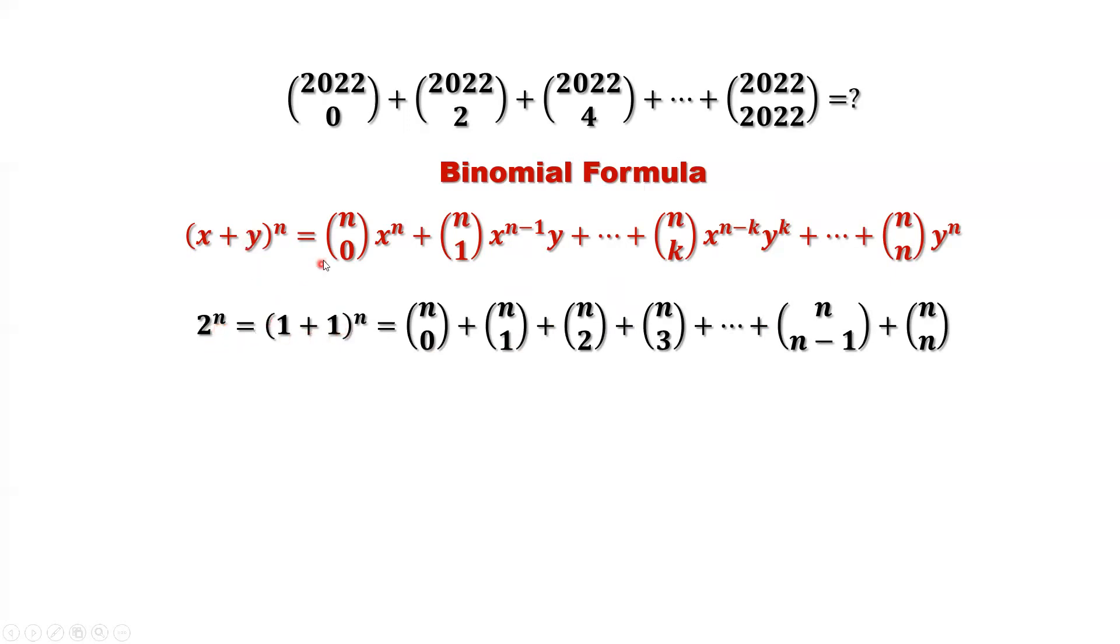2 to the power of n equals the right-hand side. You will see x, y terms only take value 1. So here, x, y terms disappear.